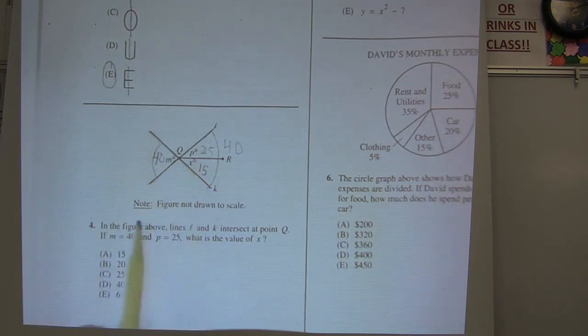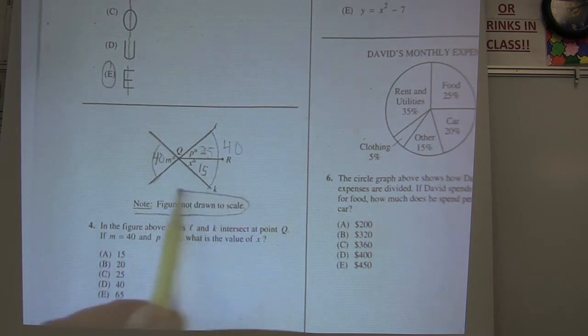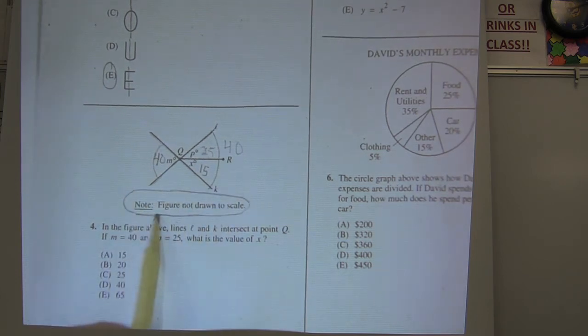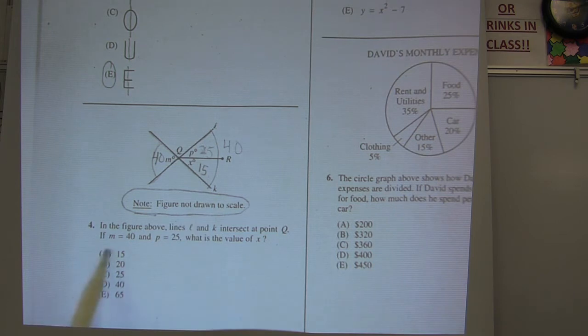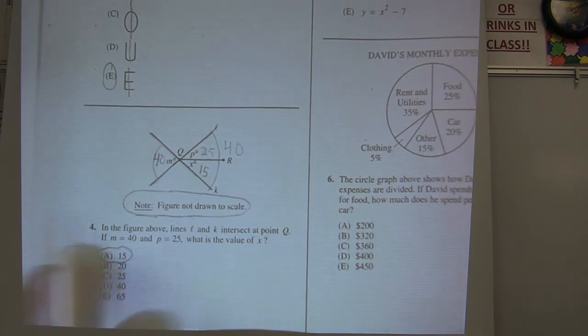Okay, notice right here it says the figure is not drawn to scale. When it's not drawn to scale, most chances it is not drawn to scale. And here, it's clearly not drawn to scale because these guys look like they're congruent to each other. But X equals 15, choice A. Okay, number 5.